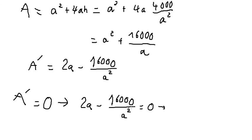So we get 2a minus 16000 over a squared. We put this on the right, and a squared multiplied by a, that's why we get 2a to the power of 3 equals 16000.